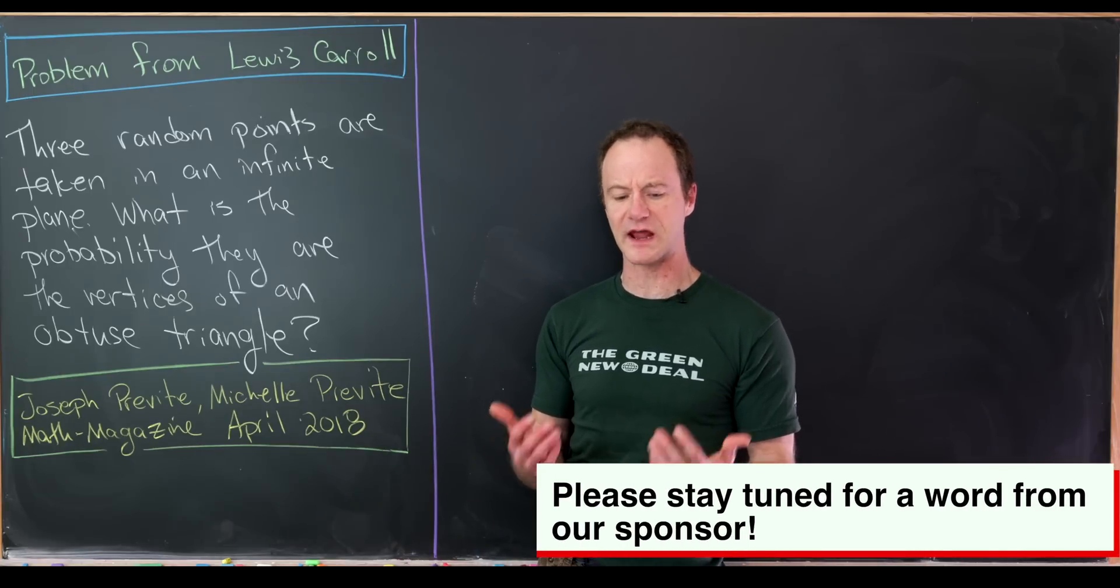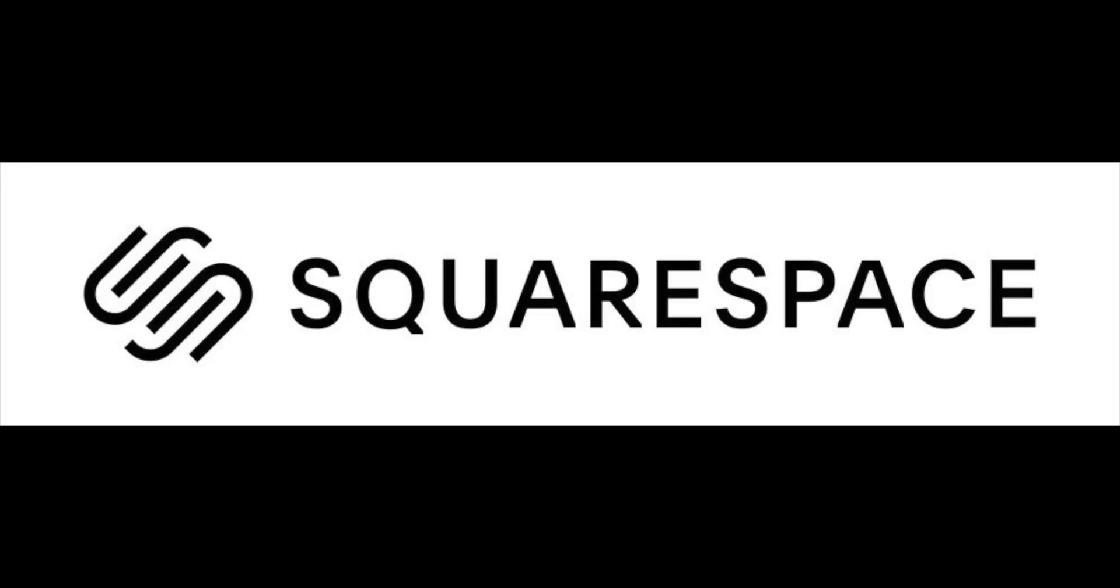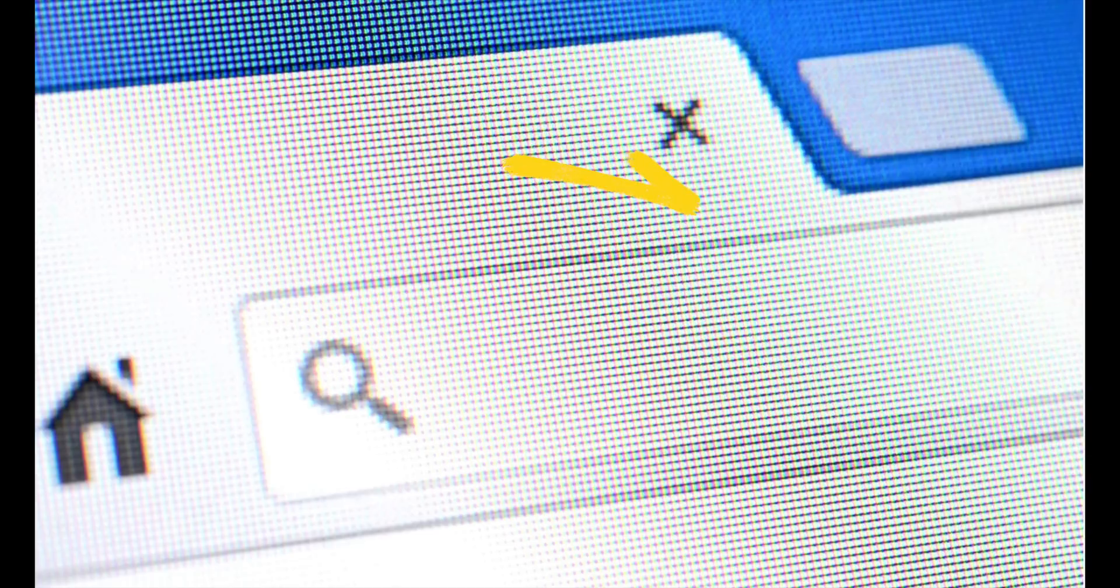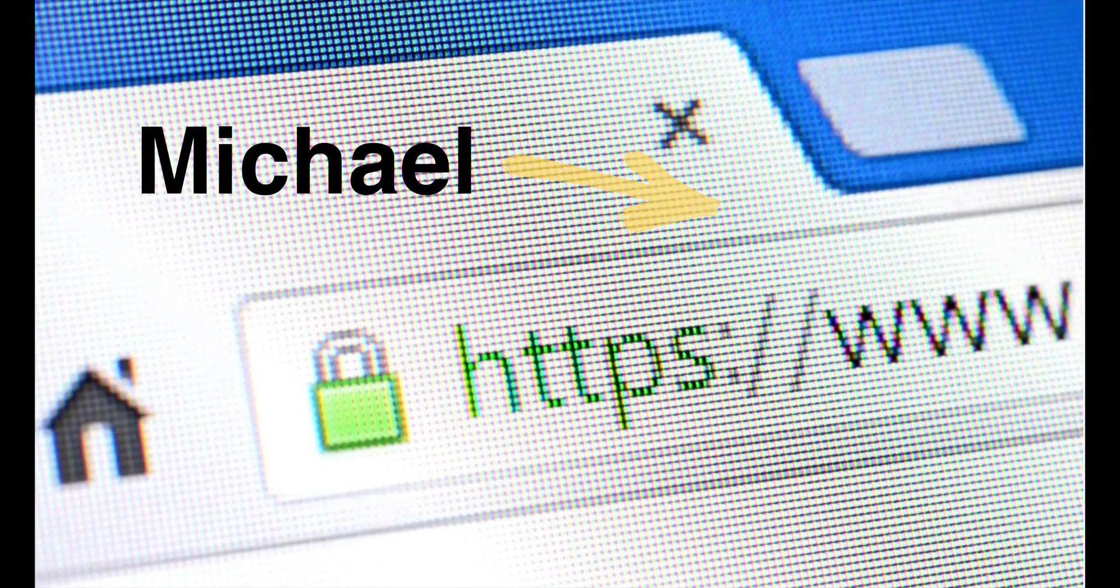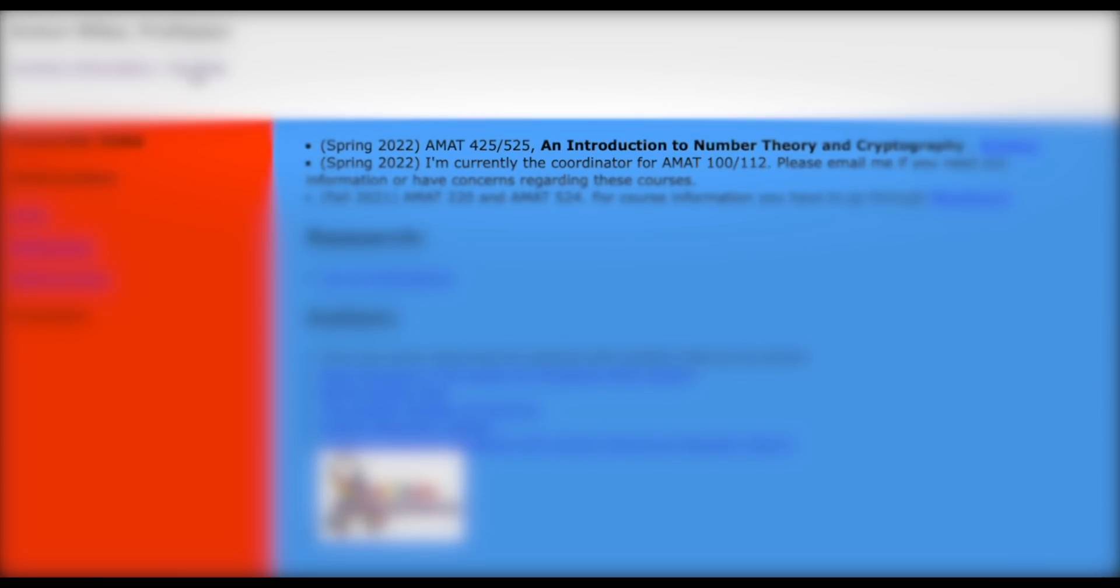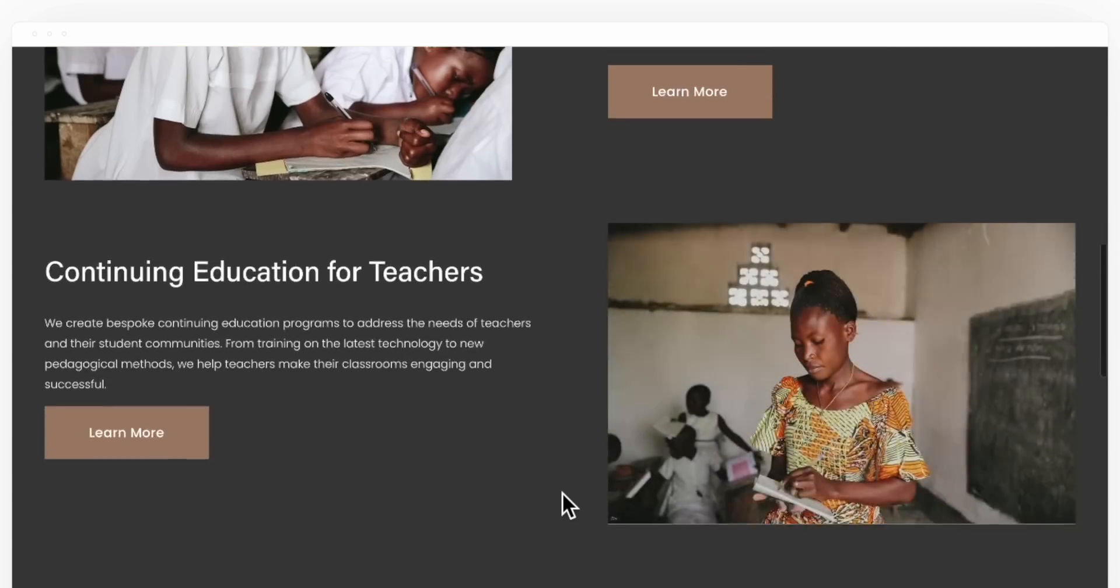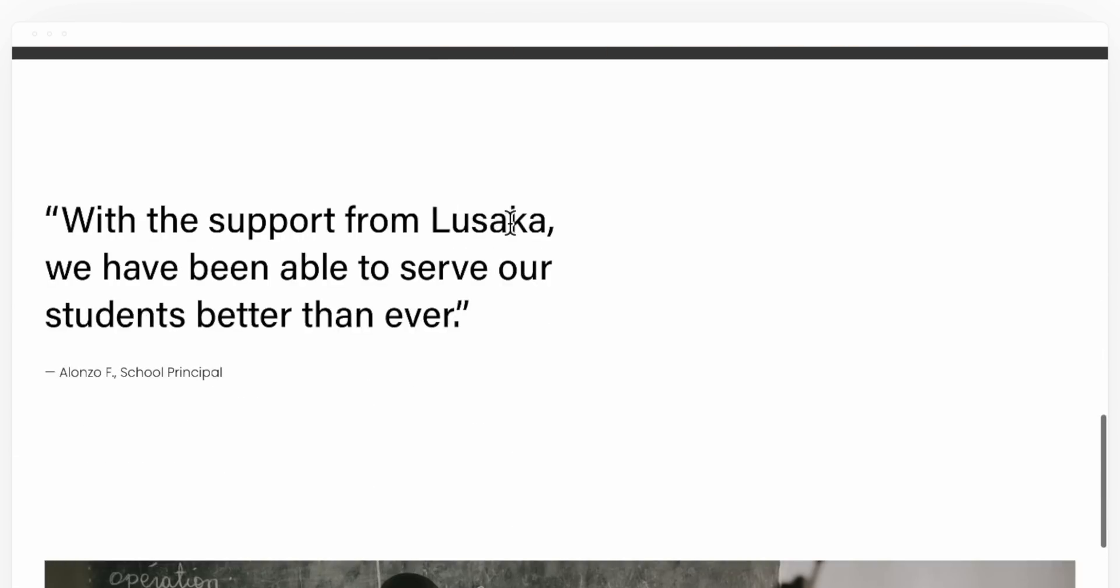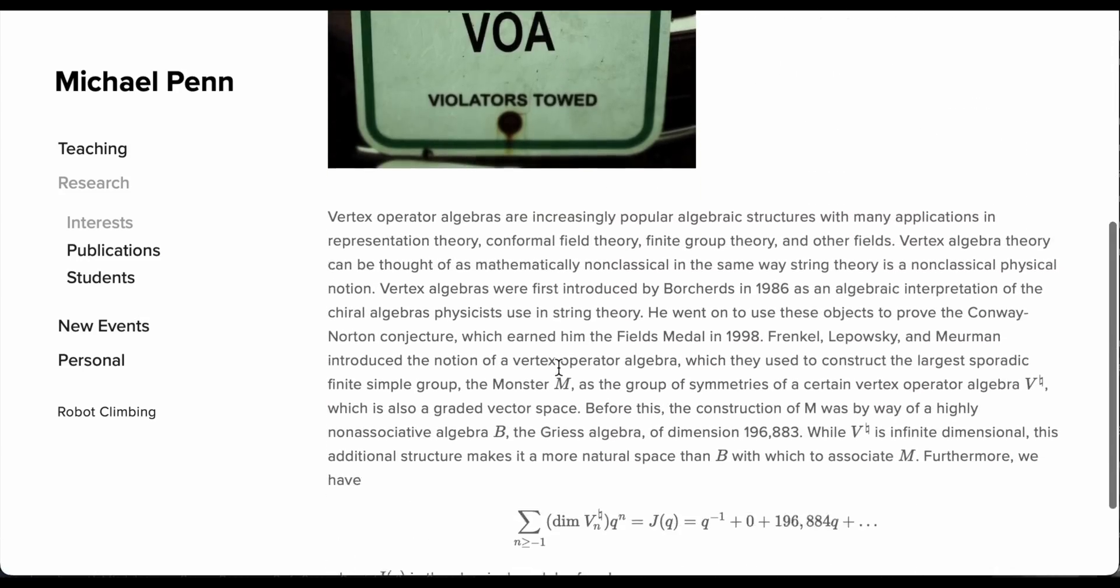If you're looking to start your own domain, personal website, or online store, look no further than Squarespace. As a website myself, I can tell you that Squarespace is the best of the best. We mathematicians need to step up our website game. Too many math websites are stuck in the 1990s. Squarespace has tons of templates that offer awesome customization options with no coding required.